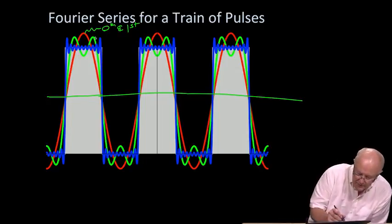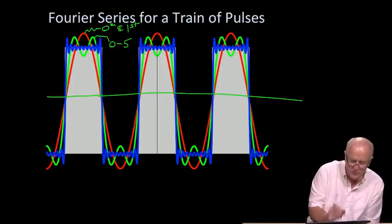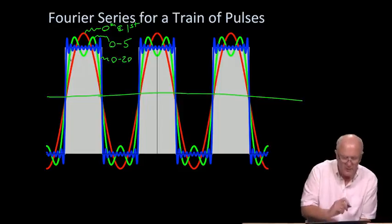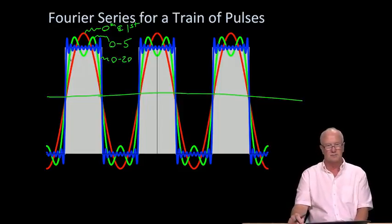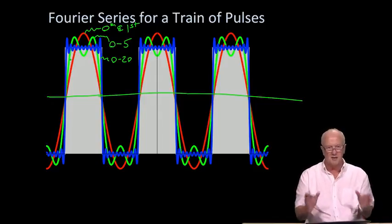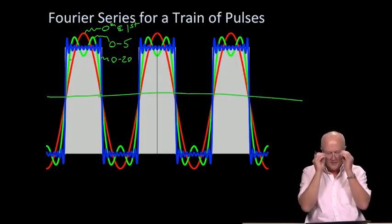As we go up and we can include zero through five, we get this light green one. And as we include zero through 20, we get the dark blue one. So, this is the essence of frequency domain analysis, frequency domain representation of something from the time domain. As we go up higher and higher in frequency, we get more and more fidelity in terms of the frequency domain reconstruction.